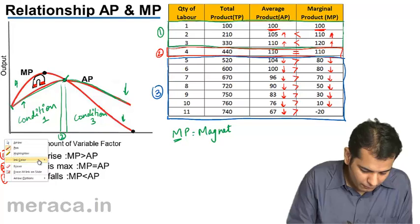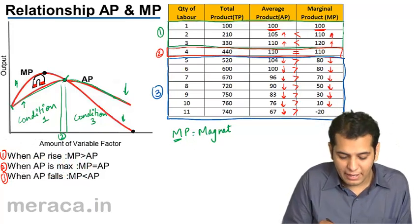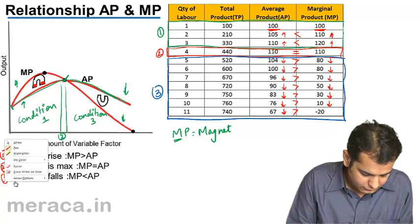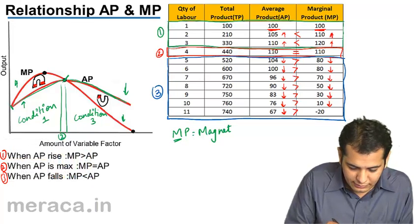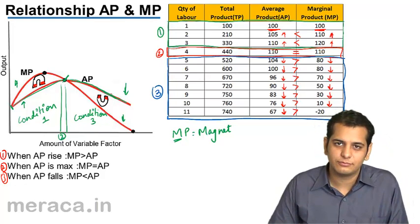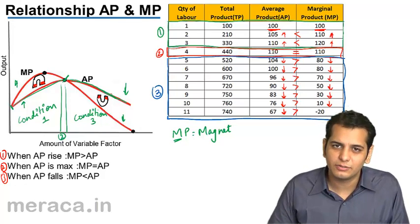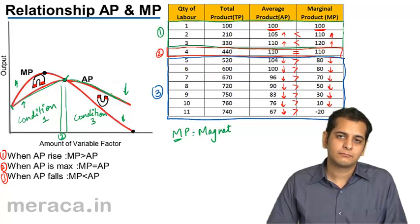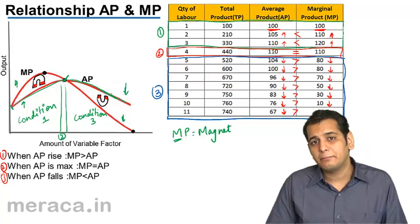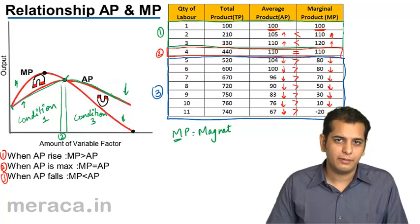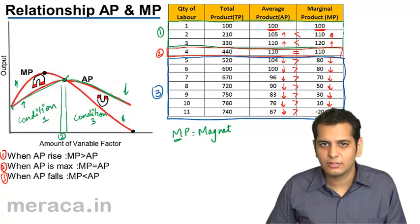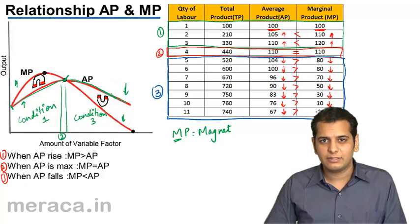So now, what MP will do is MP will again pull the AP down towards itself. So this is one of the easiest methods to remember the relation between them. They both start off from the same point. They both tend to rise. But MP tends to rise higher than AP. And what it does is, it tends to attract AP towards itself.